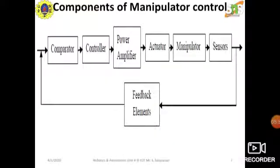The components of a Manipulator Control System are shown in this diagram. Any manipulator control will have a comparator, controller, power amplifier, actuators, manipulators, and sensors, along with a feedback system. Remember, if there is a feedback system, we call this Manipulator Control System a closed loop control system.